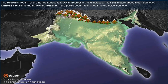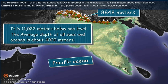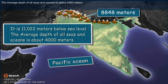The highest point of the Earth's surface is Mount Everest in the Himalayas. It is 8,848 metres above mean sea level. The deepest point is the Mariana Trench in the Pacific Ocean, at 11,022 metres below the sea level. The average depth of all seas and oceans is about 4,000 metres.